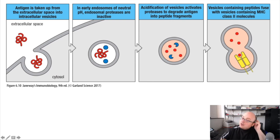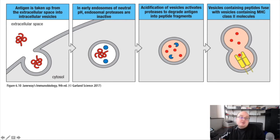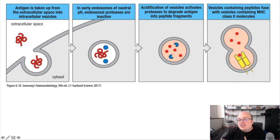However, MHC class II molecules are made in the ER. So one of the challenges is how do we make sure that MHC class II doesn't bind to all of those antigens that are being shuttled into the ER by TAP. MHC class I is also in the ER, and the ER is full of antigenic peptides that MHC class I is binding to. So how do we make sure that MHC class II waits until the right time so that it's only binding to exogenous antigens?